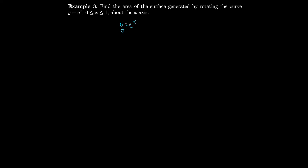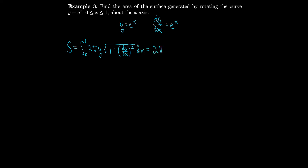Let's find the area of the surface generated by rotating the curve y = eˣ about the x-axis from 0 to 1. We have y = eˣ; we do the same thing every time and look for the derivative. The great thing about eˣ is we take the derivative instantly. So our surface area S is the integral from 0 to 1 of 2π times y — about the x-axis so it's y — times the square root of 1 plus the derivative squared, which gives 2π times the integral from 0 to 1 of eˣ times √(1 + e^(2x)).